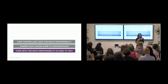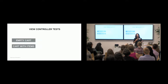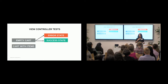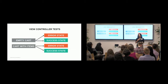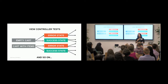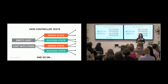The next piece is that when code has too much responsibility, it gets harder and harder to test. We start out with a cart that has two states — empty or with items — and each of those has a success state and an error state, each with different variations. This just multiplies as we get more and more different states, adding complexity and making it harder and harder to test every possible case.